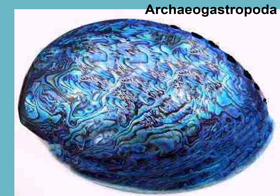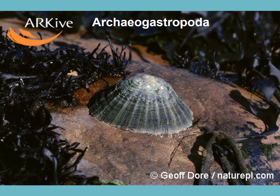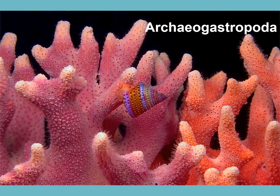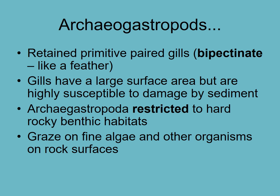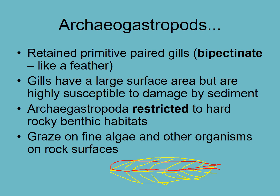Here are the slit shells again. Here is another type of archaeogastropod, an old type of shell. This is a palla. Here's a limpet, which is an archaeogastropod. Here's one that is a top shell on a coral. One thing you might have noticed about those is they all are on hard substrates, and they are usually grazers. One of the reasons they're restricted to hard substrates is because their gill looks a bit like a feather. That is called a bipectinate gill because it has one side and another side — it's very much like a feather. Bi means two.